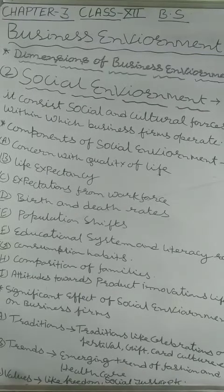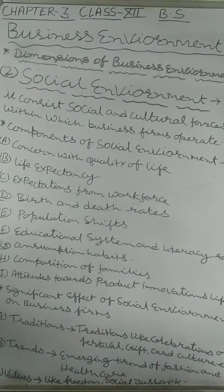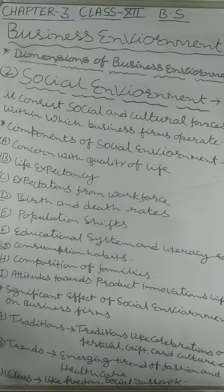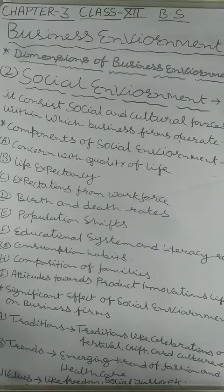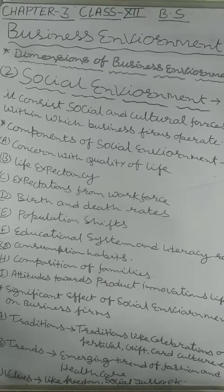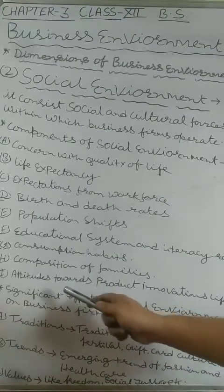Next is composition of families. In older times there were joint families, and in the composition of those families there were a variety of needs, so a variety of goods were needed by that particular family. But now there are nuclear families or single families, and in those families there is not much diversity of needs. So composite family or single family composition also has a great impact on the social environment.